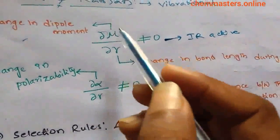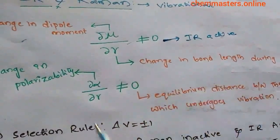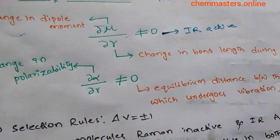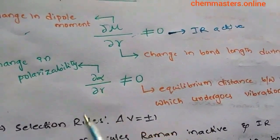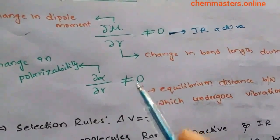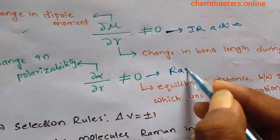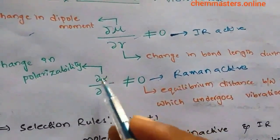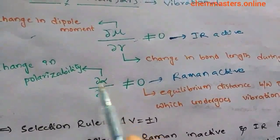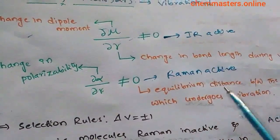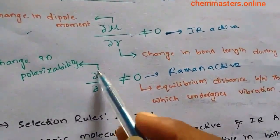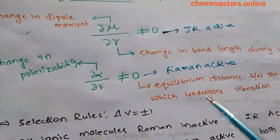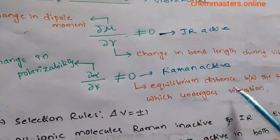The change in dipole moment and the change in distance between atoms must be not equal to zero to be IR active. Now, the equation ∂α/∂r ≠ 0 means Raman active. Here, α indicates polarizability, so ∂α means change in polarizability and ∂r is the change in bond length during vibration.